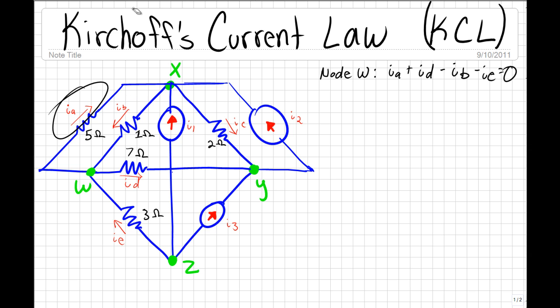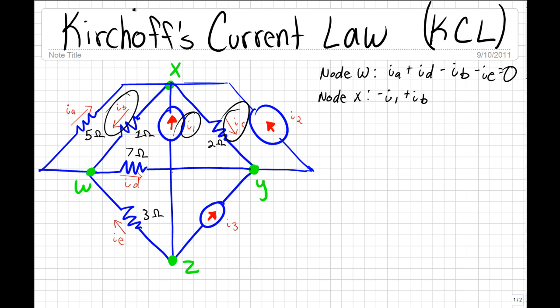Now let's find the sum of the currents at the rest of the nodes. For node X: current I1 is entering node X, so it's going to have a negative sign: minus I1. Current IB is leaving node X, so it's going to have a positive sign: plus IB. Current IC is also leaving node X, so it's also going to have a positive sign: plus IC. And current I2 is entering node X, so it's going to have a negative sign: minus I2. And this should equal to zero.